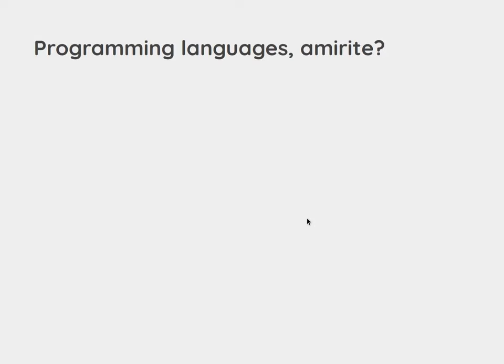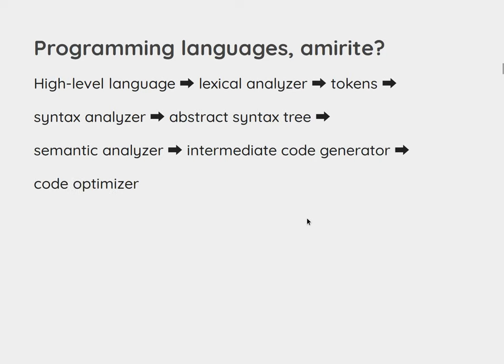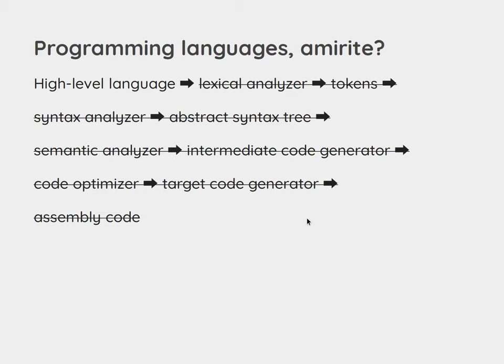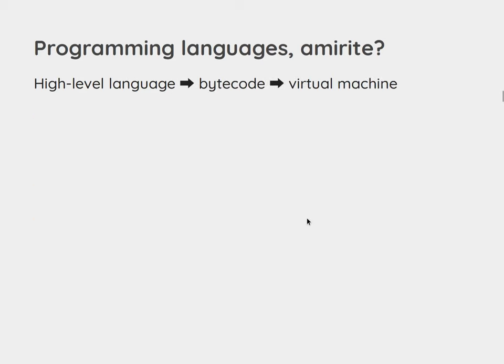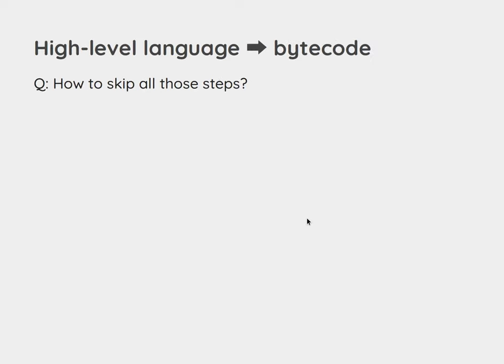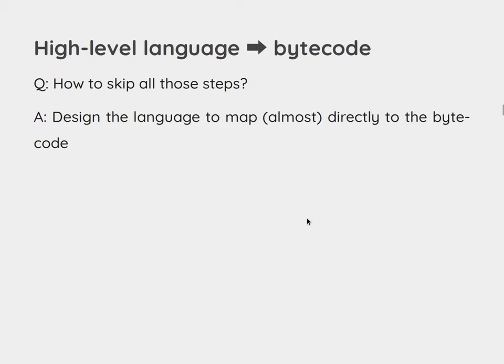Let's talk about programming languages. They are incredibly complicated methods of complexity to implement, and if you ever want to make one yourself, you can probably think, I don't want to deal with all that. So what we're going to do in these 20 minutes is basically skip all of these steps I'm not even going to explain because I don't have time, and we're just going to do these three things. We're going to start with our language, create some bytecode, and then run that code on a virtual machine.